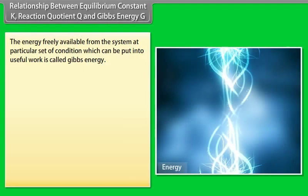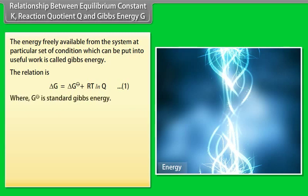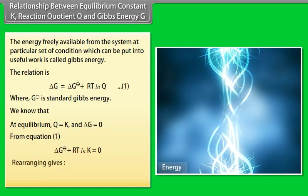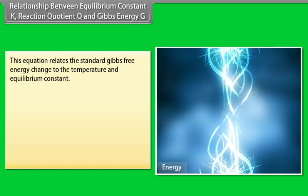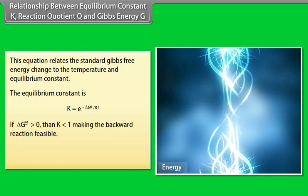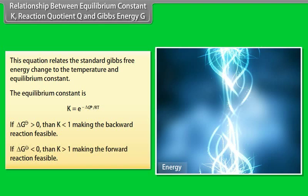Relationship between equilibrium constant K, reaction quotient Q, and Gibbs energy G: The energy freely available from the system at a particular set of conditions which can be put into useful work is called Gibbs energy. At equilibrium, Q equals K and ΔG equals 0, which gives the relation between standard Gibbs free energy and the equilibrium constant: ΔG° = −RT ln K. If ΔG° > 0, then K < 1, making the backward reaction feasible. If ΔG° < 0, then K > 1, making the forward reaction feasible.